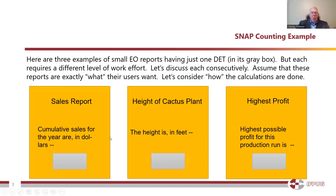From a function point count, we're going to make a couple of assumptions. First of all, let's assume that each one of these three reports is exactly what the user wants. Since each one of these has only one field in them — the gray field — we are going to measure each of these as four function points in size. That'll be our starting point. As a notional number, let's say on average an organization pays $500 per function point, so the average cost of these three would be about $2,000. Let's see if that's really realistic.